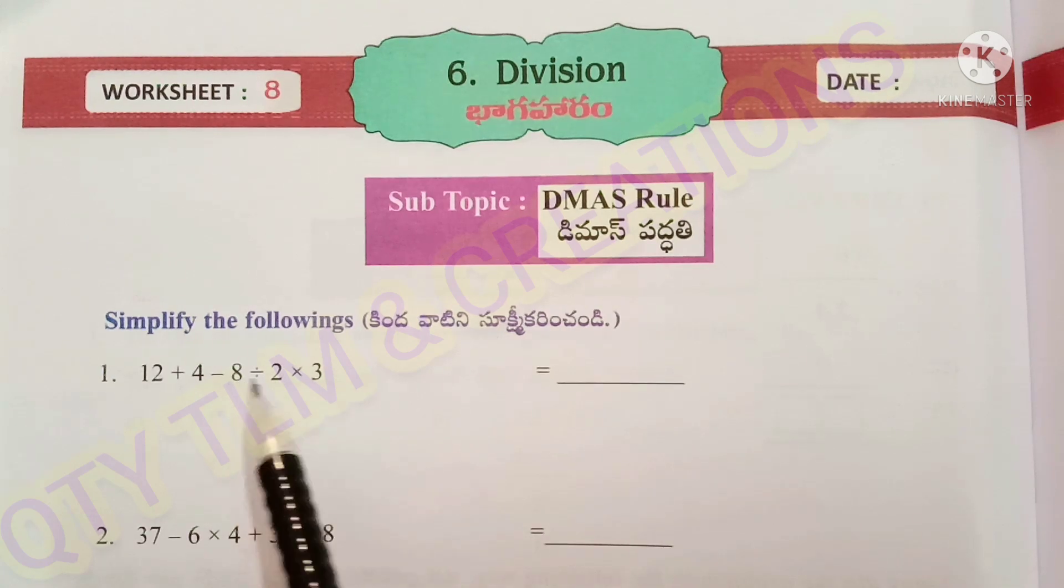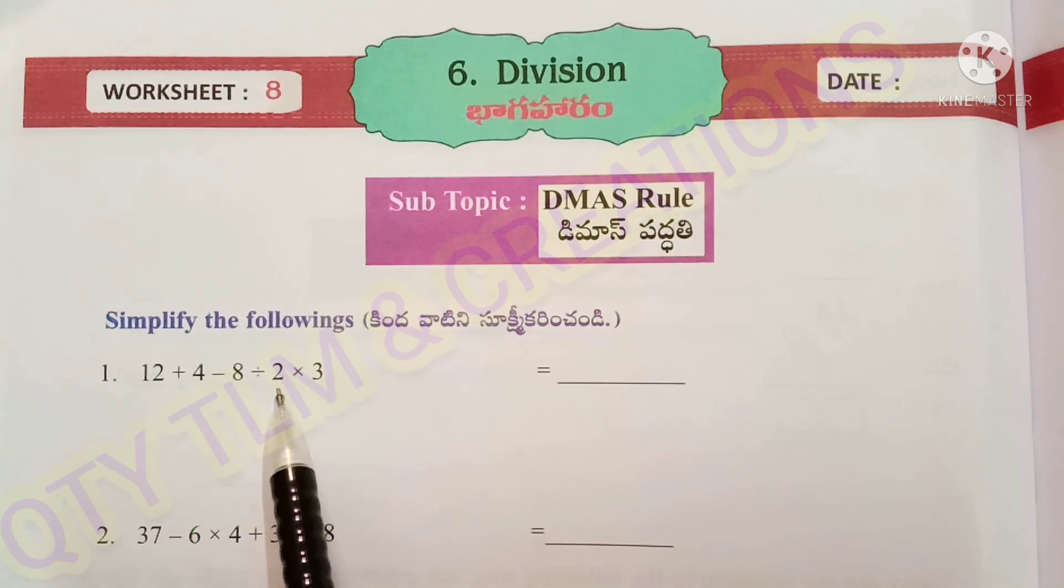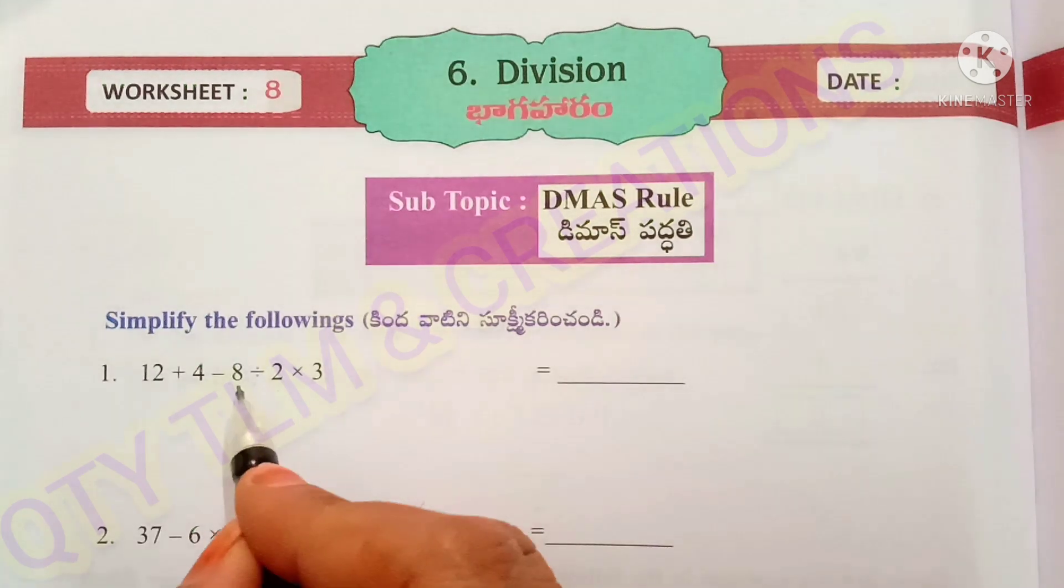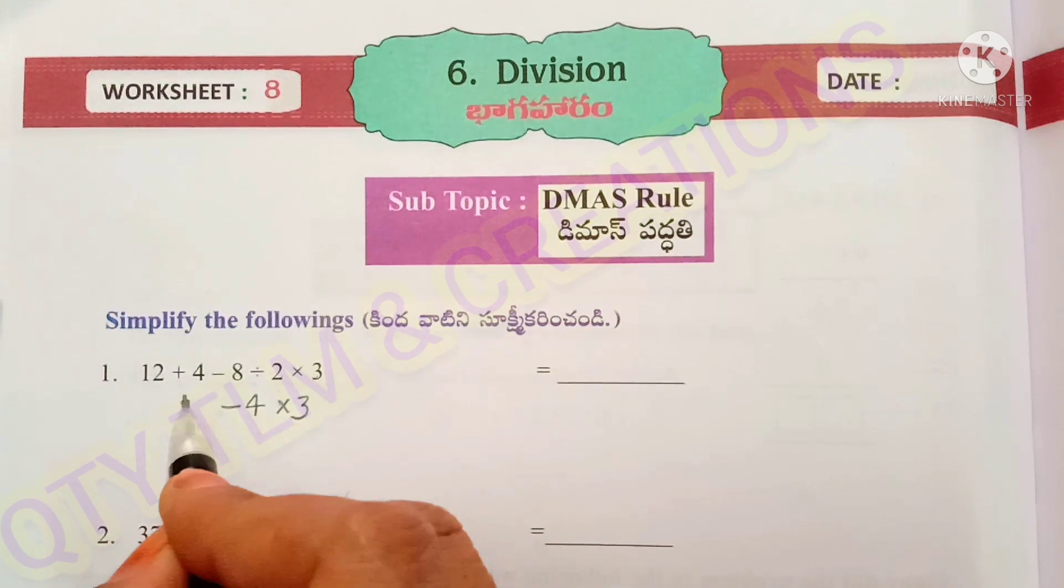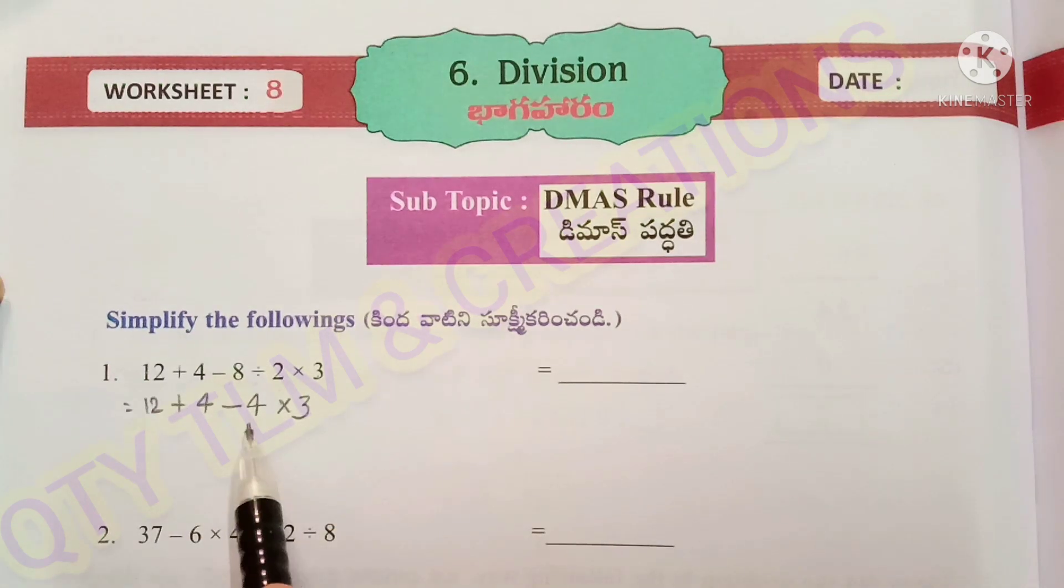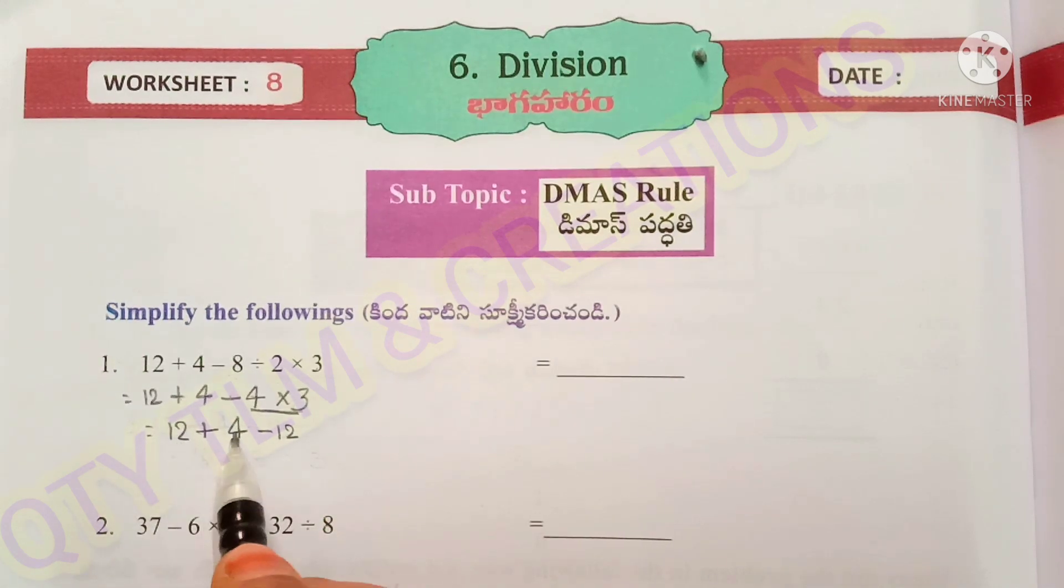We perform the division first. So here, 8 divided by 2. So 2 divides 8 for 4 times, 4 into 3 minus 4 plus 12. Next the operation is multiplication. So 4 times 3 is 12 minus 12, so 4 plus 12. Next operation is addition. So 12 plus 4 is equal to 16 minus 12. That is equal to 4. So the answer is 4.